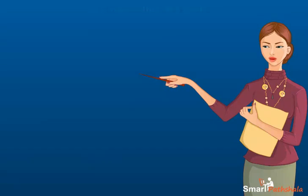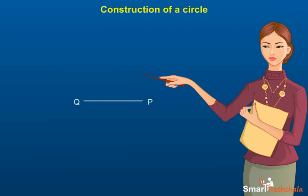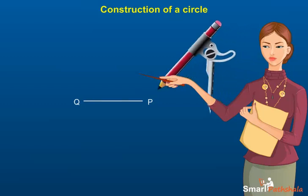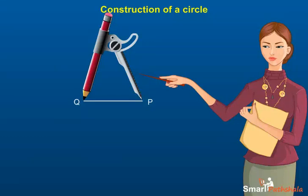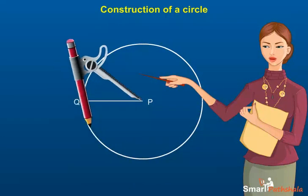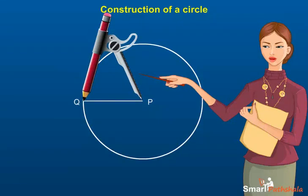Let us draw a circle whose radius is given. Step 1: Draw a line segment of the given radius. Name it PQ. Step 2: Place the pointer of the compasses at P and open it for the required radius PQ. Step 3: Now turn the compasses slowly to get the required circle. We get a circle with center P and radius PQ.